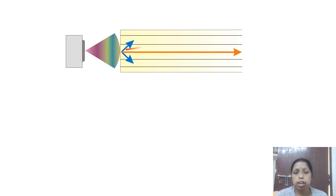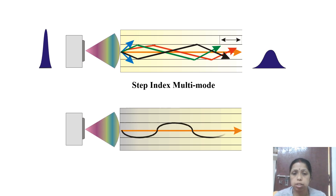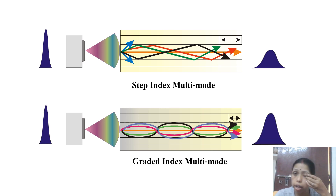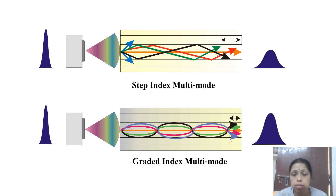In the diagram, you can see single-mode fiber, step-index multimode fiber, and graded-index fiber compared. In graded-index fiber, all rays reach the other end at almost the same time, giving the least dispersion. In step-index multimode fiber, rays reach the other end at different times, resulting in high dispersion.